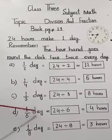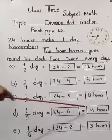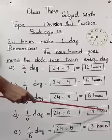D, 1 over 6 days. 24 divided by 6. 6 fours are 24, 4 hours.